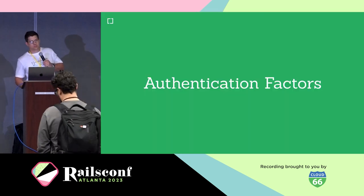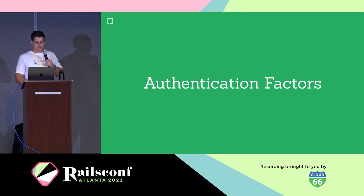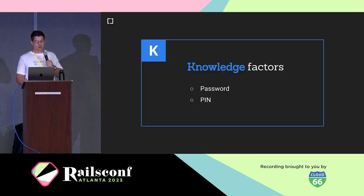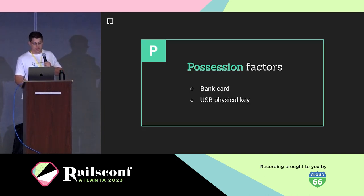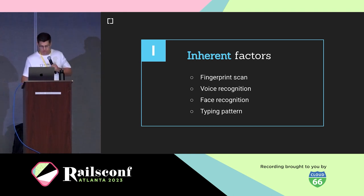Anyone designing an authentication system needs to think about authenticator factors. There are three categories: knowledge factors — something we know, like a password or a PIN; possession factors — something we have, like a banking card or a security key; and inherence factors — something we are, like our fingerprint, our face, our voice, or a typing pattern we leave every time we type.